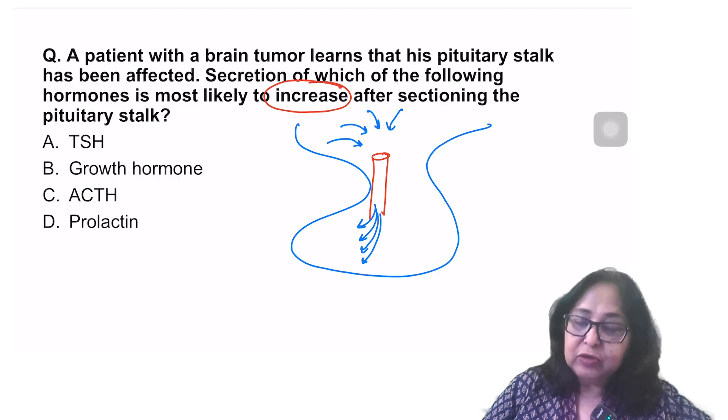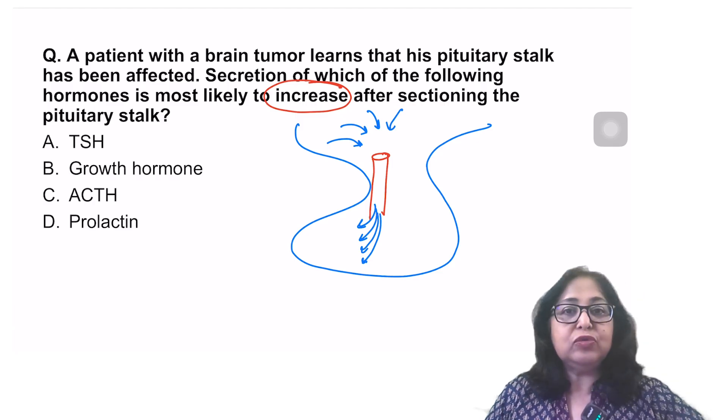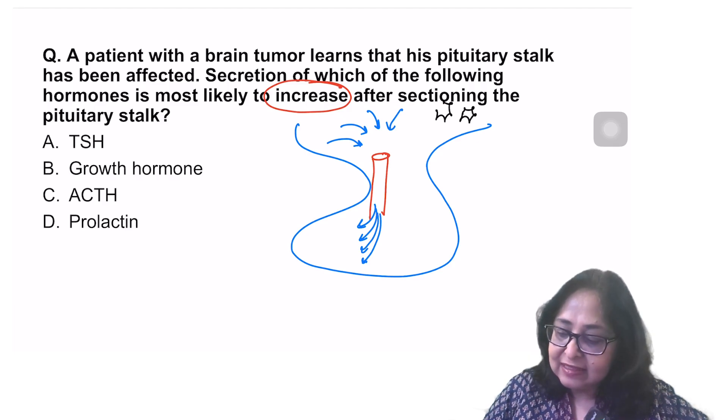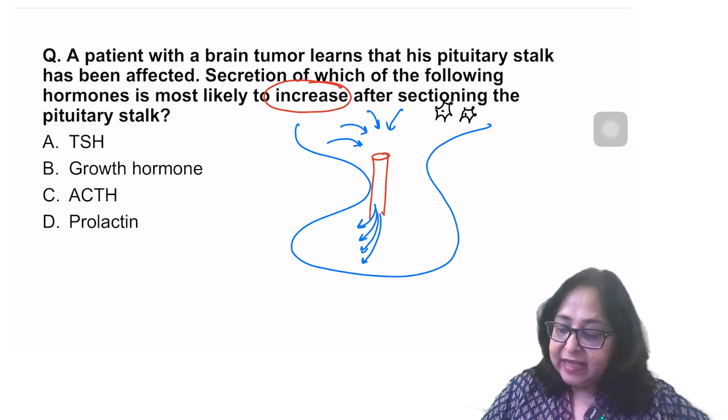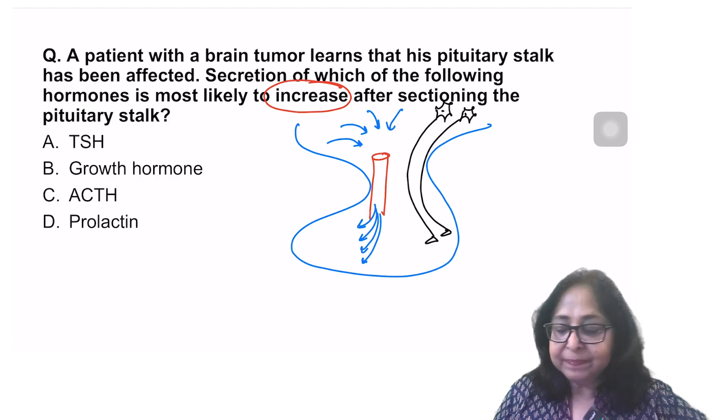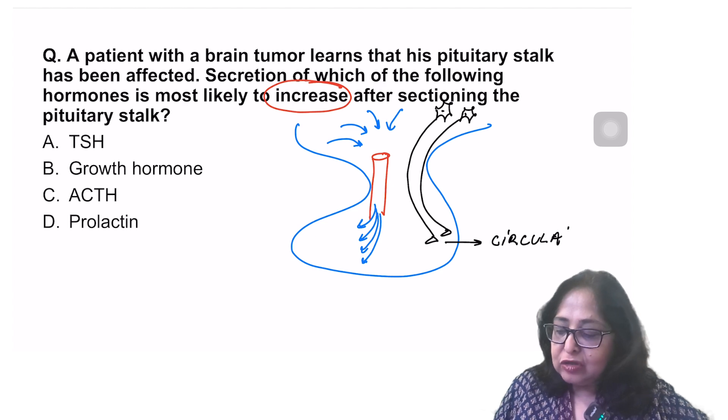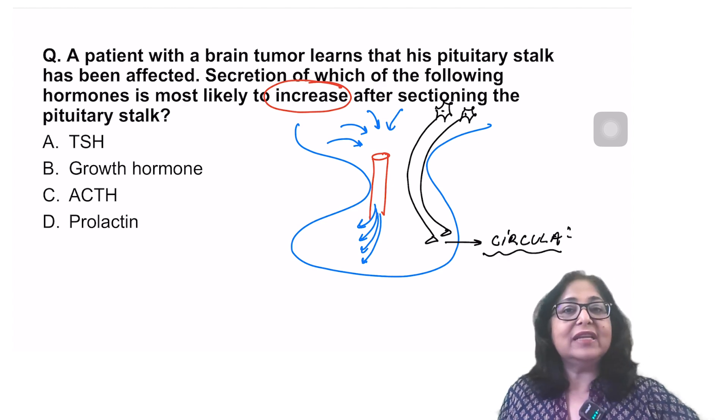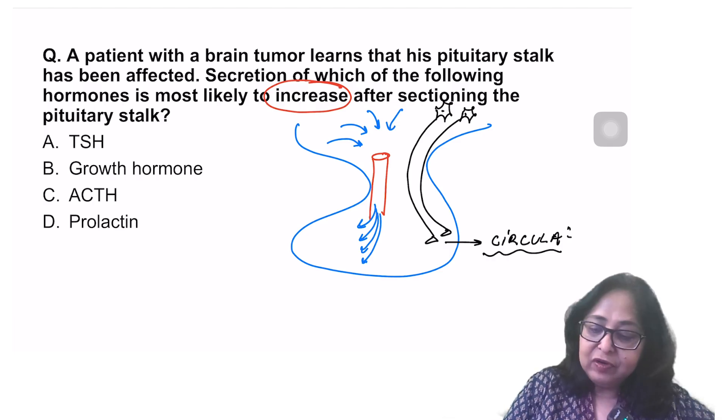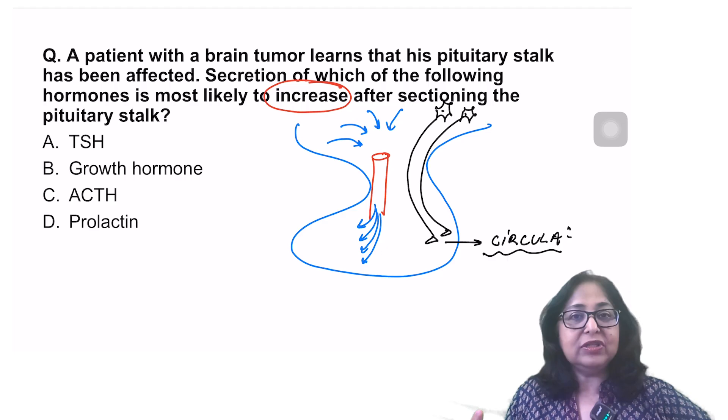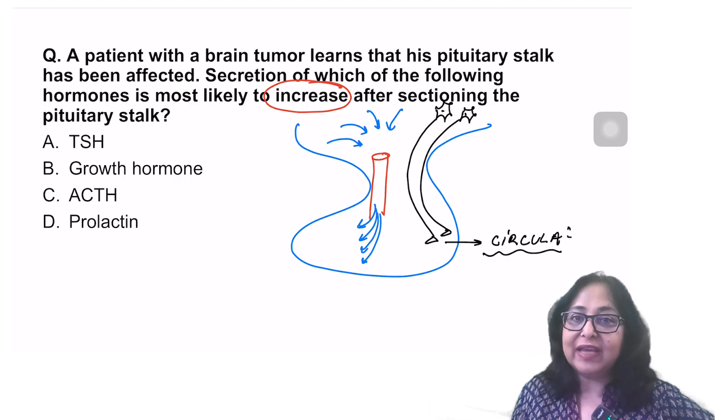What about the posterior pituitary? The two posterior pituitary hormones are ADH and oxytocin. Both of these are synthesized in the hypothalamus, then transported by axoplasmic transport into the posterior pituitary and then they enter into the circulation. So ADH and oxytocin undergo what is known as neurosecretion. Now let's have a look at which are the hypothalamic hormones regulating the secretion of the anterior pituitary.